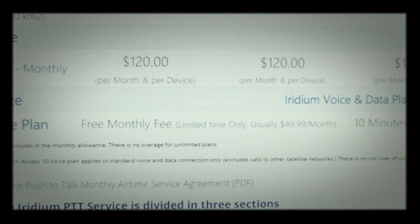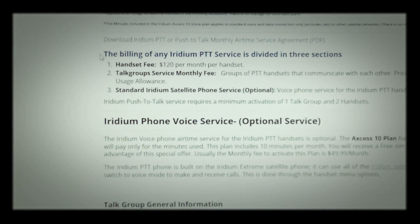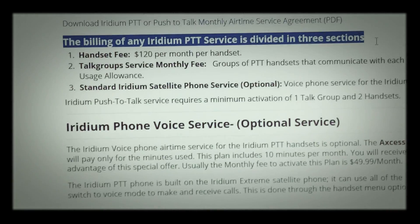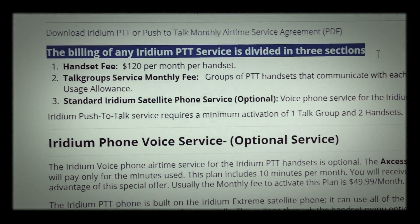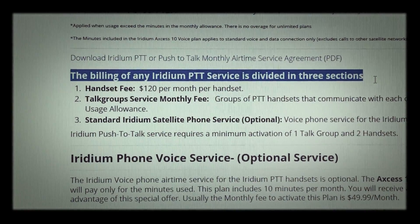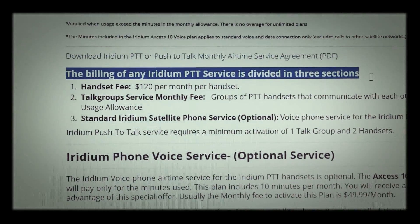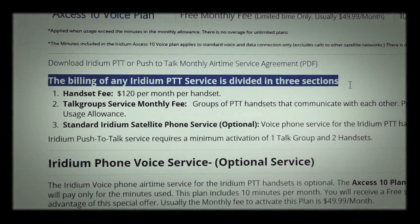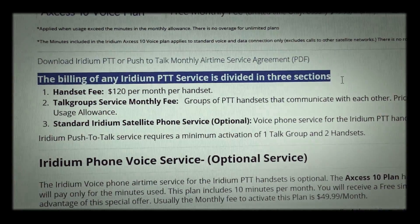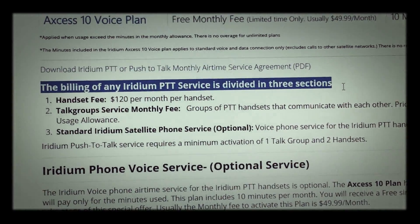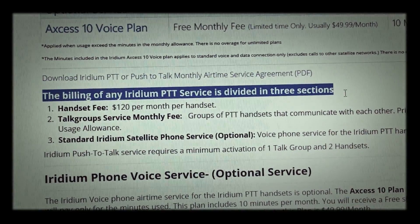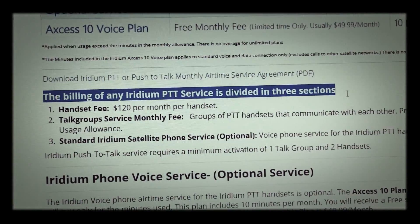Let's go into some of the basics of the Iridium PTT plan breakdown. You've got three things. First is the handset fee — you're going to usually pay $120 per month just to have the handset active and operational every single month. These PTT phones do not need a SIM card to be active, so you don't need voice services. You can activate it by the IMEI, which is kind of like the serial number. You just buy the phone, select your plan, and activate it by that.